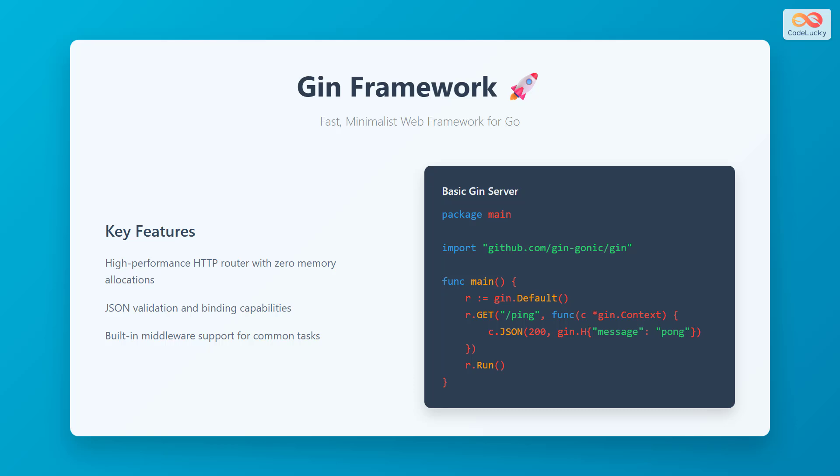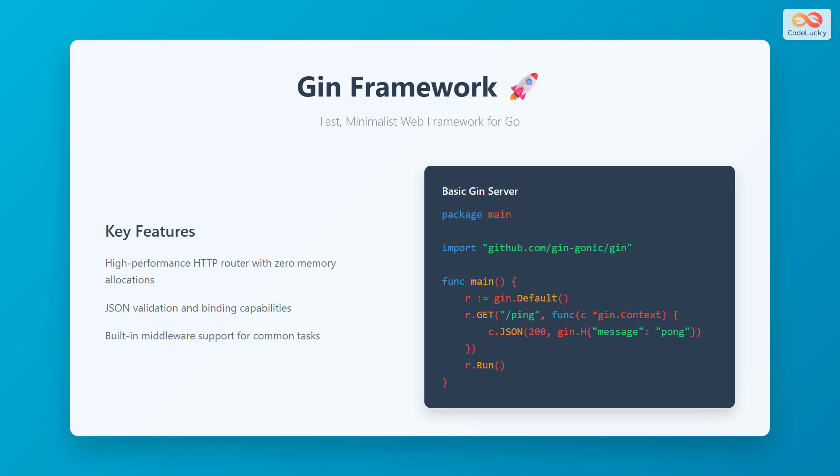The framework provides built-in JSON validation and binding capabilities, which simplifies working with API requests and responses. JIN also comes with comprehensive middleware support for common tasks like logging, recovery, and CORS handling. The code example shown demonstrates how simple it is to create a basic web server with JIN.